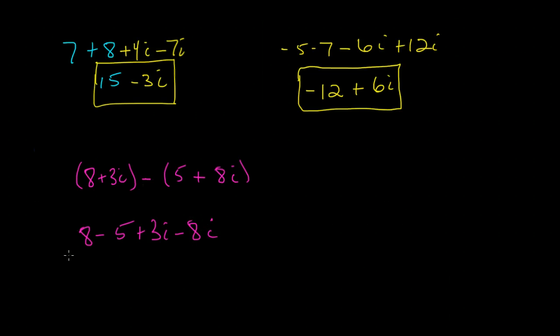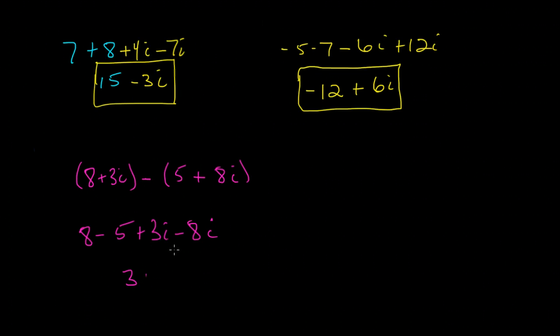And then at this point, it's just simple arithmetic. 8 minus 5 is 3, plus 3 minus 8 is minus 5i. Not too shabby.